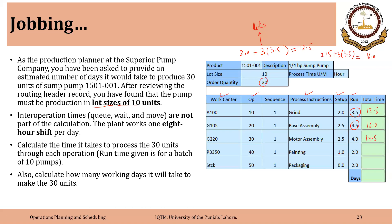Similarly, for painting it will be 1 plus 3 into 2, so that equals 7 hours. There is no setup in the case of the last operation, so the run time for 10 pumps is 2, meaning 2 into 3 equals 6 hours. Adding these together: 12.5 plus 16.5 plus 14.5 plus 7 plus 6 equals 56 hours total. With 8 hours per day, that is approximately 7 days.